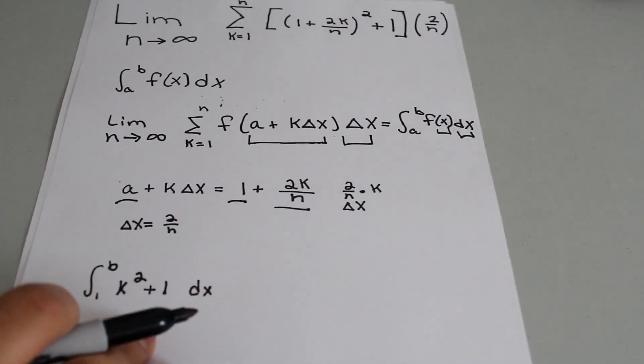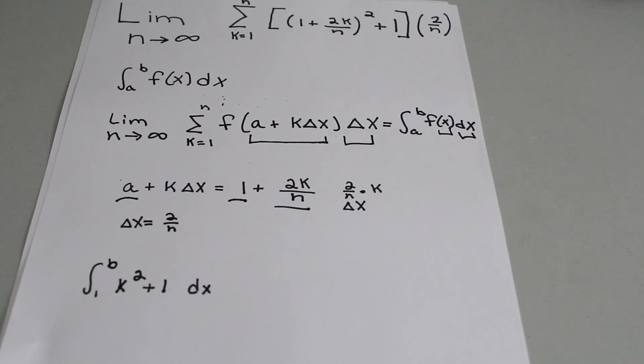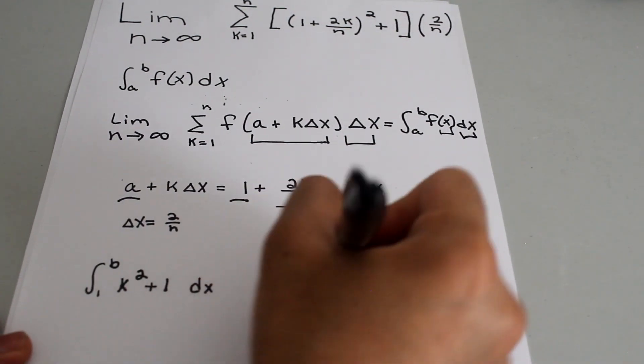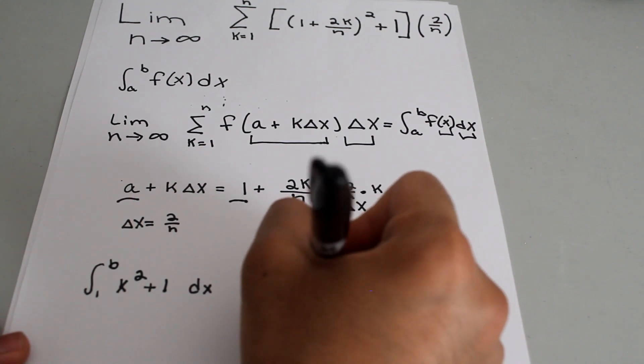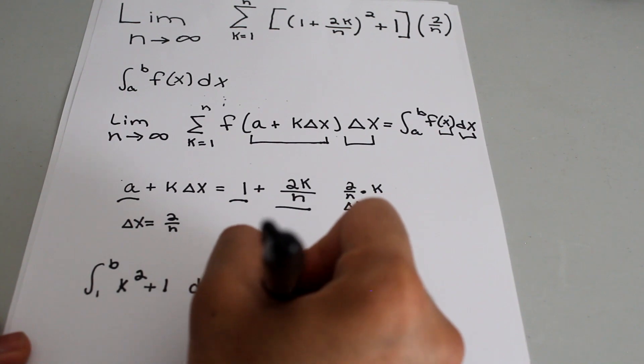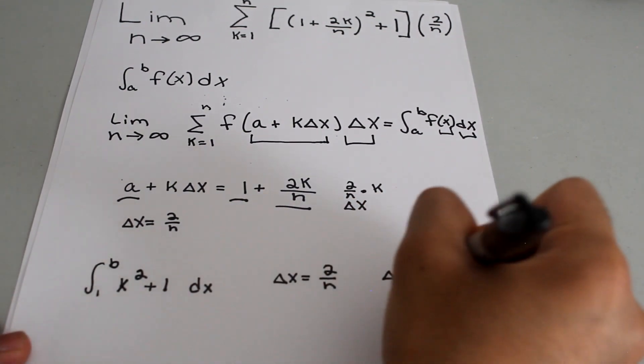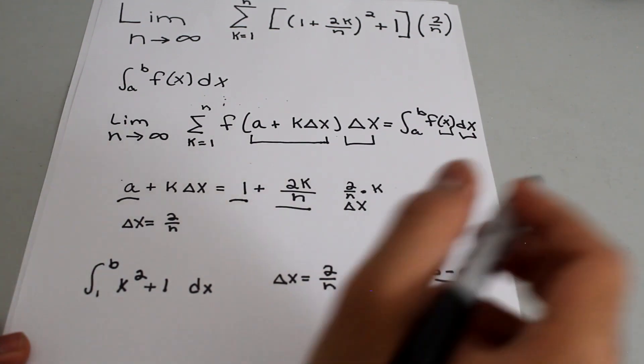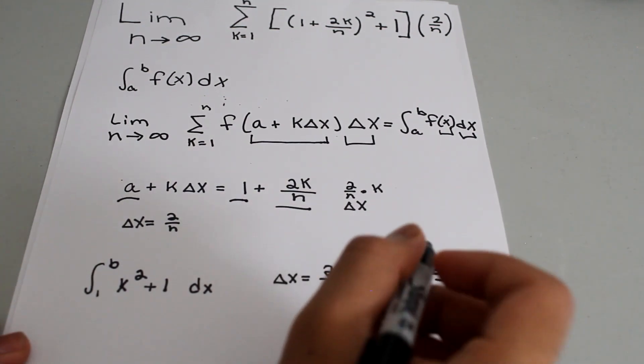Now we don't know what b is yet, but we know delta x is equal to 2 over n. We also know that delta x is equal to b minus a over n. So if we said that 2 delta x is equal to each other,